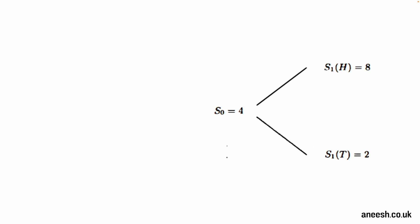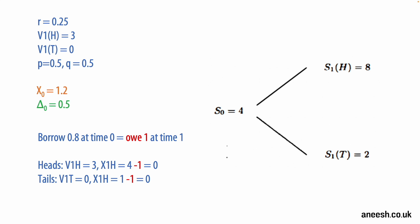For example, let's revisit our model from the previous video where we use the risk-neutral price of 1.2 to sell the European option with a strike of 5, where the stock price starts at 4 and can rise to 8 or fall to 2 in one period. We'll have an interest rate of 0.25 and we know that we also need a delta of 0.5 to hedge this exposure. So our agent borrows 0.8 from the money market at time 0 and owes 1 at time 1 due to the 25% interest rate.